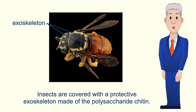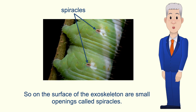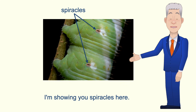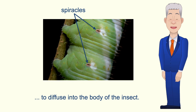Insects are covered with a protective exoskeleton made of the polysaccharide chitin. Gases such as oxygen and carbon dioxide cannot easily pass through the exoskeleton. So on the surface of the exoskeleton are small openings called spiracles — and I'm showing you spiracles here. Spiracles allow gases such as oxygen and carbon dioxide to diffuse into the body of the insect.